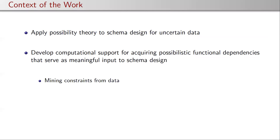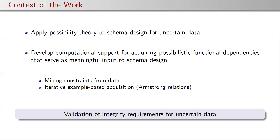This can be done in two ways: either by mining constraints from data and putting a human in the loop to check their meaningfulness, or by doing iterative example-based acquisition based on Armstrong relations. It's the latter that this work is basically about — the validation of integrity requirements for uncertain data.